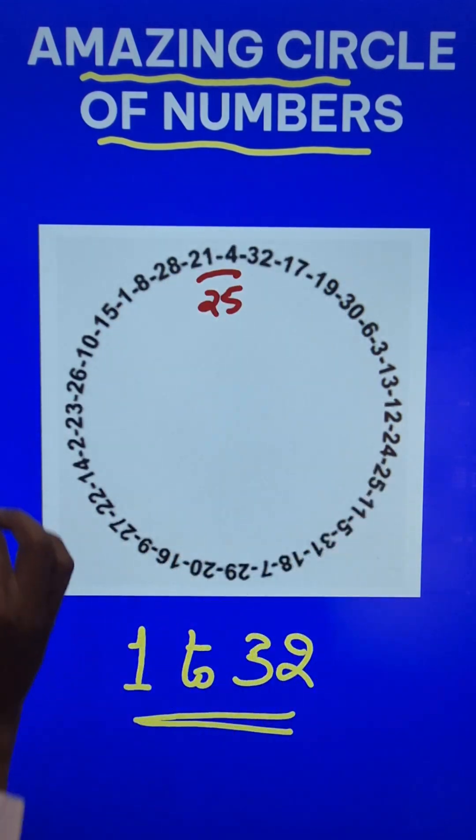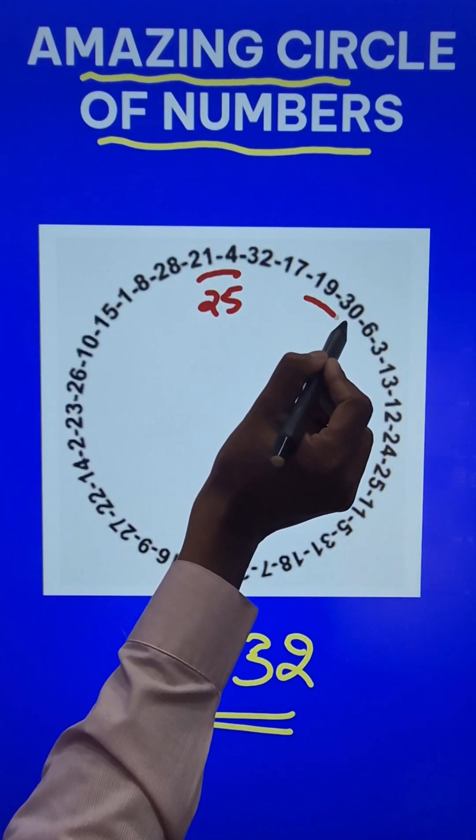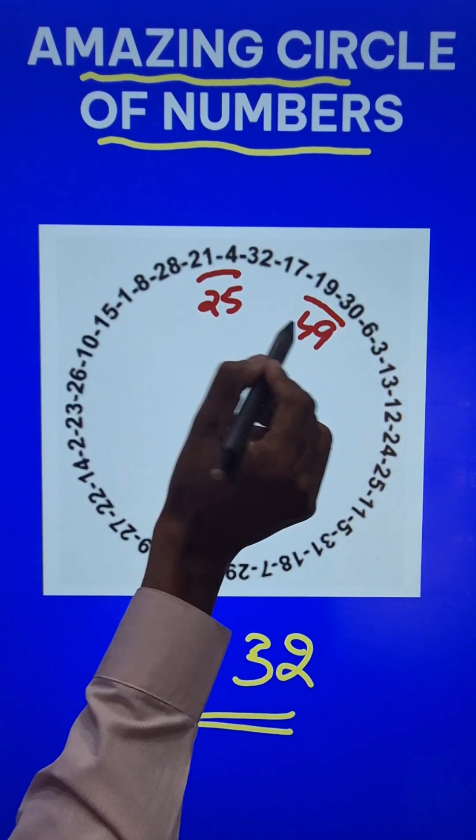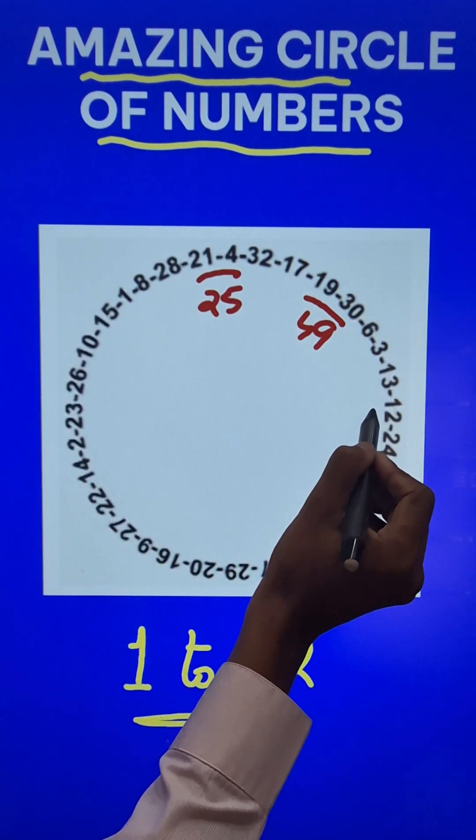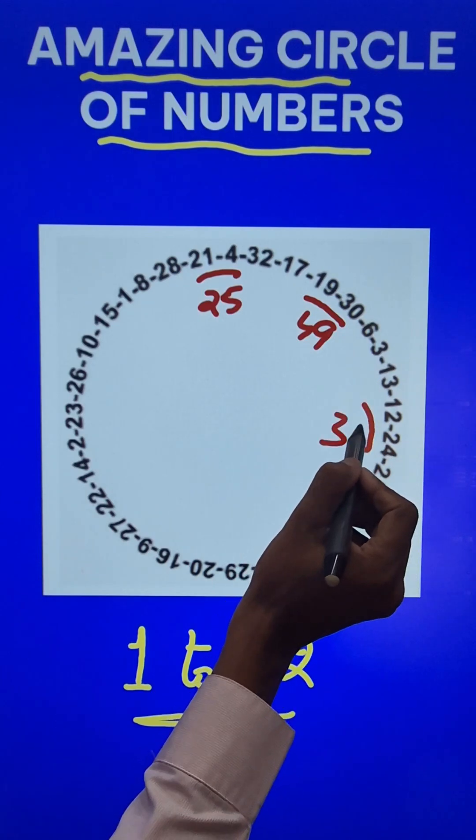Take any two such numbers which are in order: 19 and 30, 49, it is a perfect square. 12 and 24, 36, it's a perfect square.